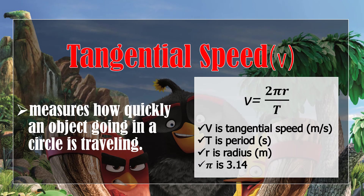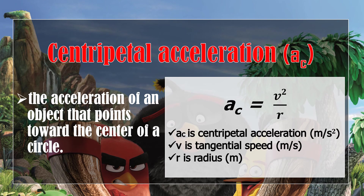Tangential speed measures how quickly an object going in a circle is traveling. The formula is v equals 2 pi r over T, where v is tangential speed in meters per second, T is the period in seconds, r is the radius in meters, and pi equals 3.14. Centripetal acceleration is the acceleration of an object that points toward the center of a circle, with the formula: centripetal acceleration equals v squared over r, where centripetal acceleration is in meters per second squared and r is radius in meters.